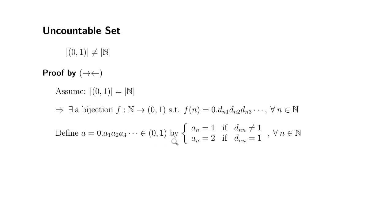We're going to define it by: an is going to be set to be 1 if dnn is not equal to 1. An is going to be set to 2 if dnn is equal to 1. So what we're trying to do is we're trying to make sure that the an is always different from dnn.